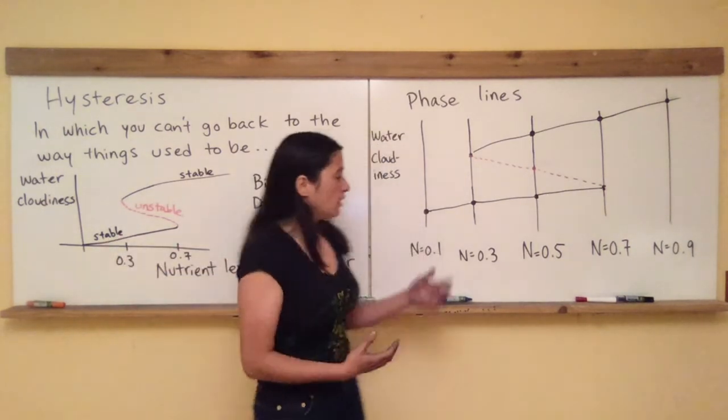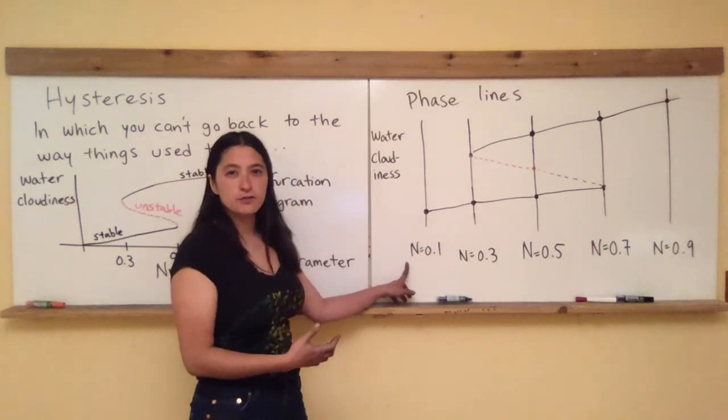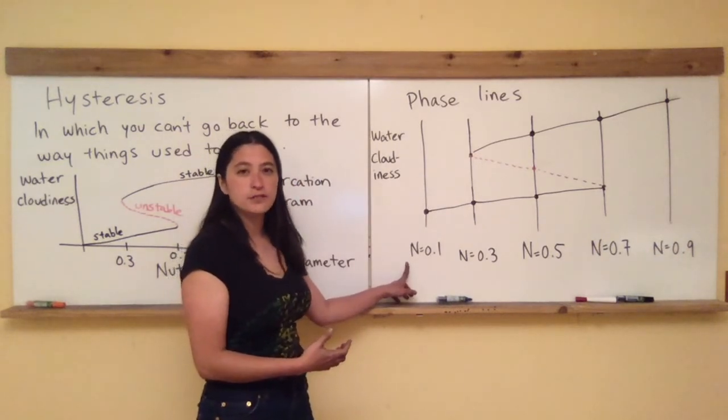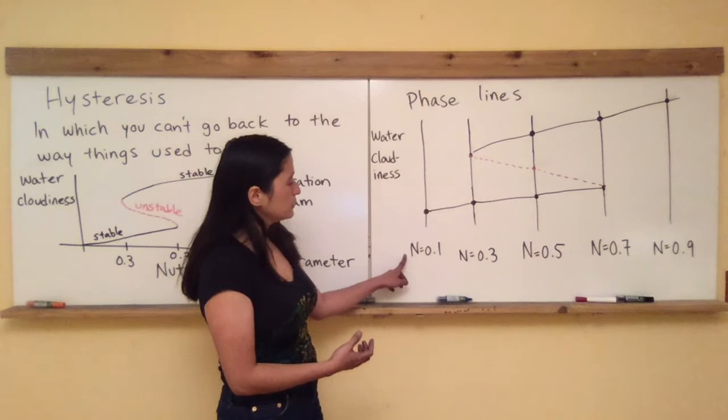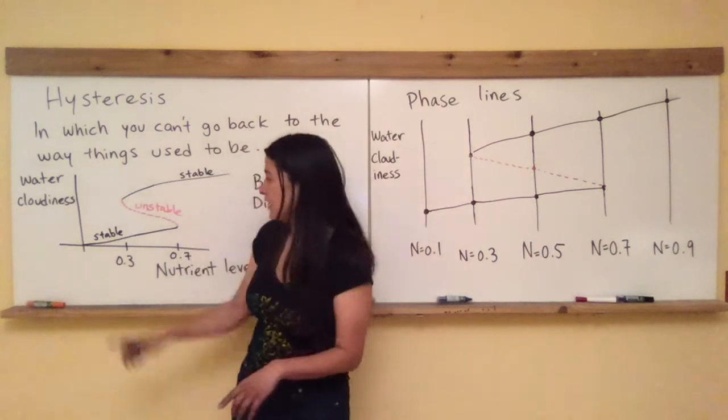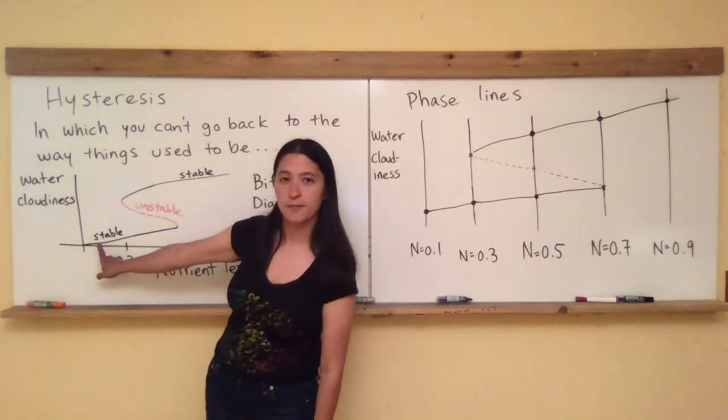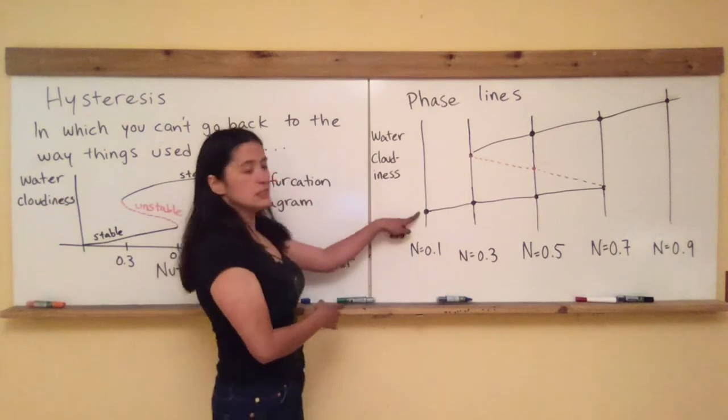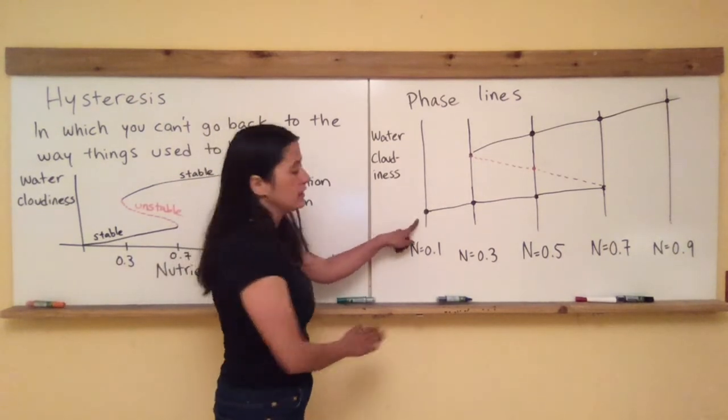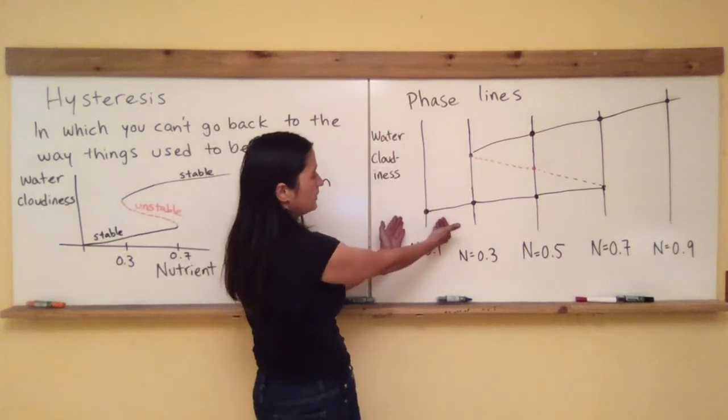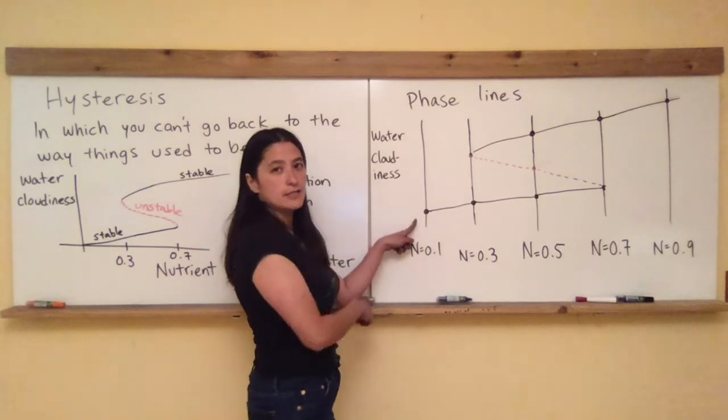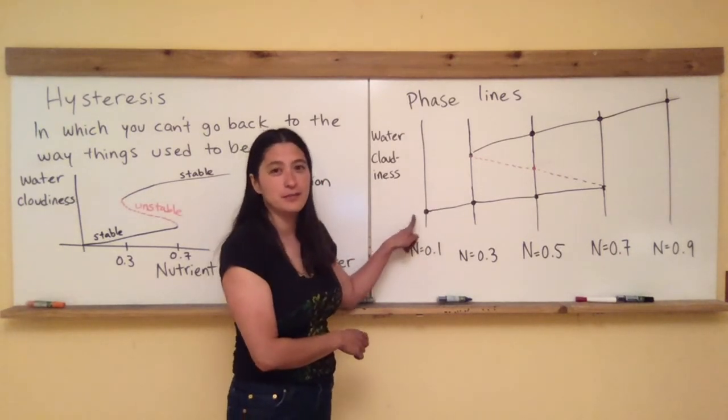It looks nice and pristine clear. When my nutrient level is low, I'm always going to have predicted just a stable low level of cloudiness in my water. Now, that's also illustrated here. I've given you the phase line for one particular value of the nutrient level which is 0.1. That would be like looking right here on the bifurcation diagram. And you can see there's just that one stable fixed point and just looking at this one phase line, we see the water cloudiness is pretty low and that water is looking pretty good to me.